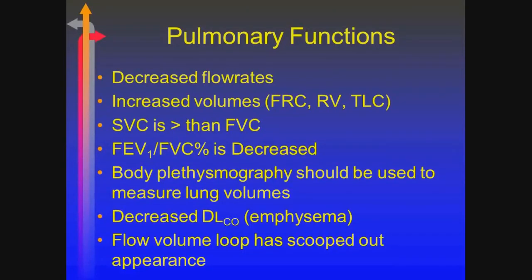Pulmonary function tests primarily show a reduction in airflow exhibited by reduced flow rates. Because they can't get air out, they have increased trapped gas exhibited by increased FRC and TLC. There's a difference between their slow vital capacity and forced vital capacity because of dynamic compression — the equal pressure point is pushed further central and more peripheral gas is trapped. We typically use body plethysmography to measure lung volumes rather than helium dilution or nitrogen washout, because those trapped areas would never be exposed with the other two tests. For emphysematous patients, there's also a reduction in diffusing capacity.